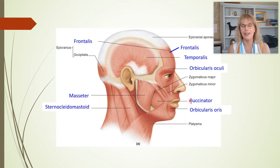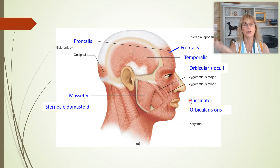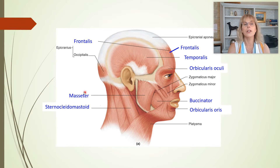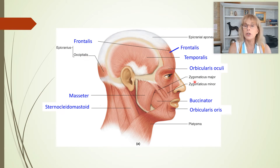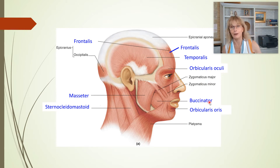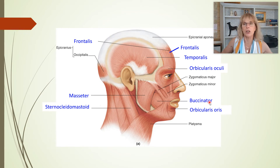Let's start with the muscles of the head and the neck. On these PowerPoints, I've taken the image from your textbook, and the muscles you need to learn the names of are in a larger, bolder font. This would indicate that you do not need to know the occipitalis, but you do need to know the frontalis. You don't need to know the zygomaticus major, but you do need to know the buxinator. The ones in bigger, bolder, colored font — those are the ones you need to know.